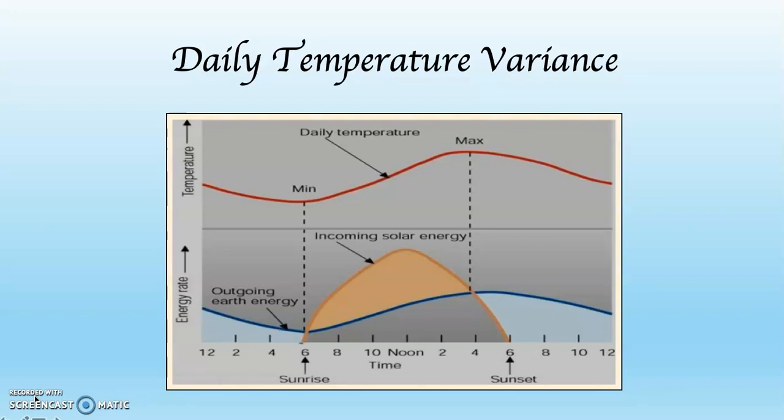Then take a look at the top and you can see that there's a temperature curve in red. Then there's an incoming solar energy, in other words insolation, in orange. And then down along the bottom, you can see outgoing Earth energy.